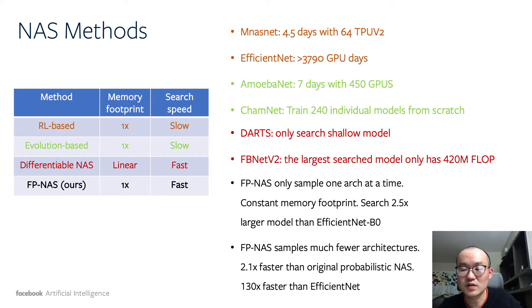We propose FP-NAS approach, a faster version of the probabilistic Neural Architecture Search method. FP-NAS only samples one architecture at a time and doesn't use more memory than that in standard model training. Compared with previous methods, FP-NAS not only searches much faster, but also discovers better models.